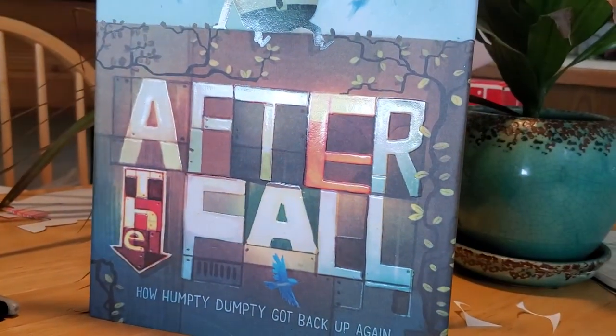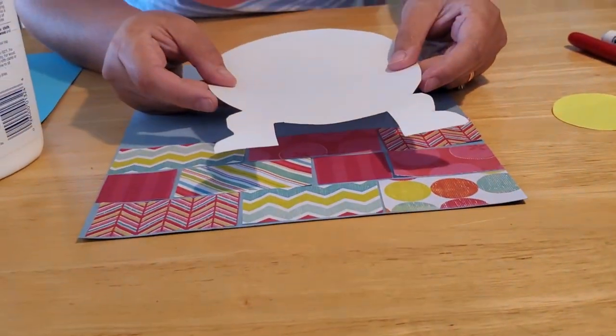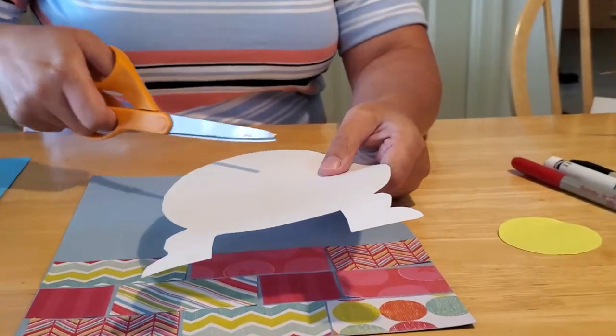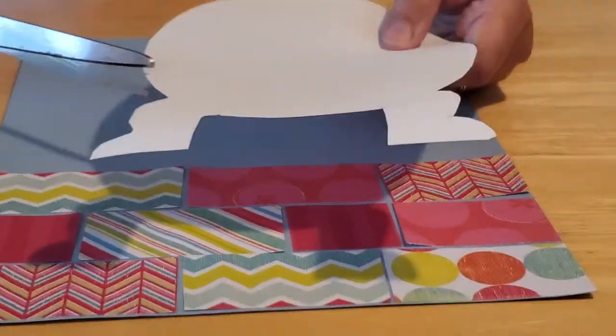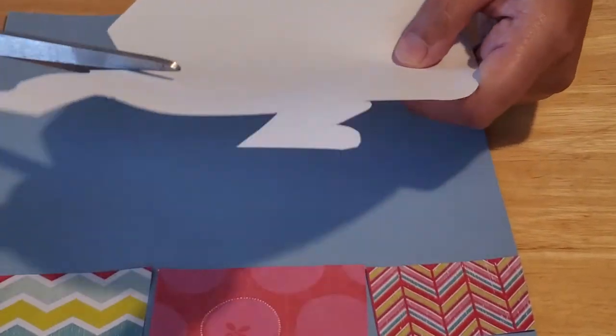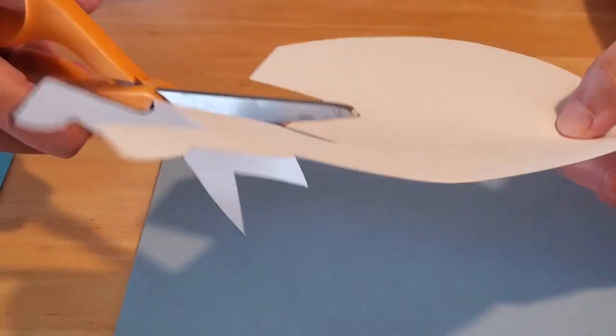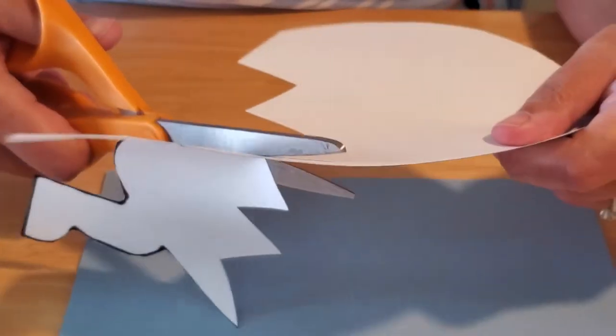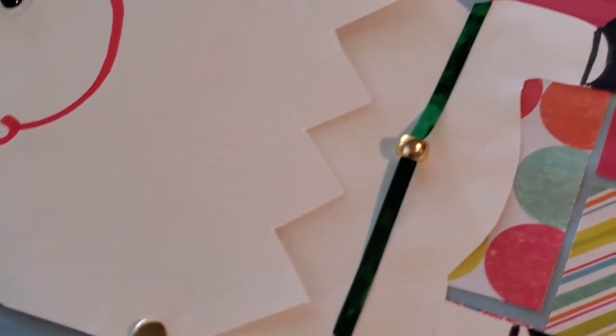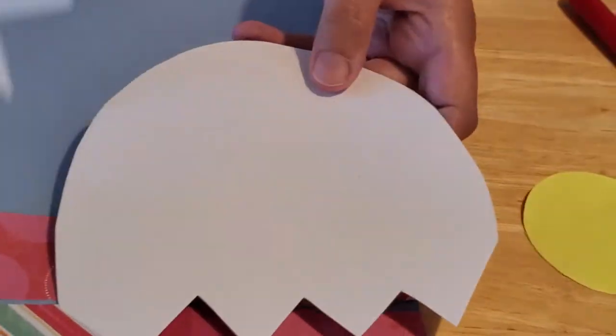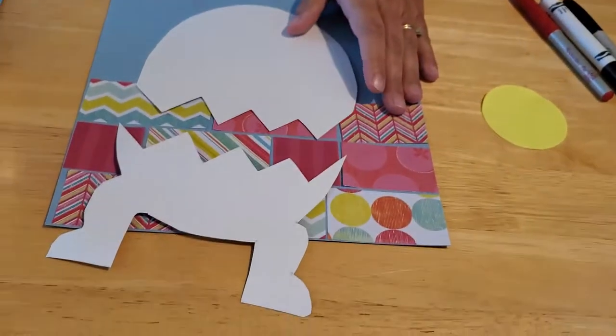Then you want to take your Humpty Dumpty, and we're going to have to crack him open. And this is where it gets kind of fun. You don't want to start up too high because you want to be able to put a face on him later. So you want to come down here a little bit lower on his body, and you just want to make some zigzag cuts. Again, your new cutters might need some help with this. And you can make as many zigzag cuts as you want. But we want to completely cut Humpty Dumpty in half so that you've got two parts to your Humpty Dumpty.